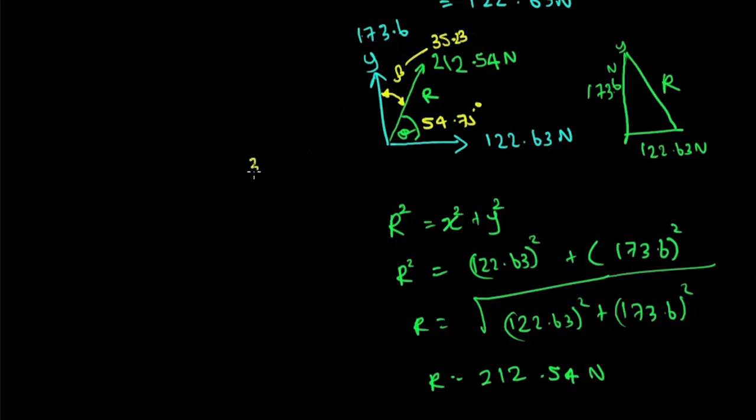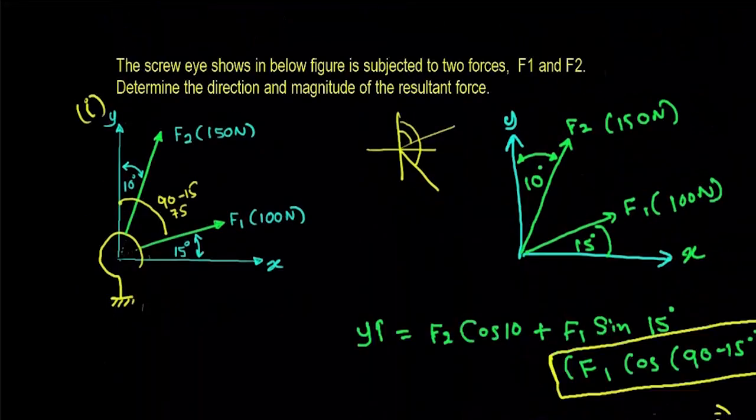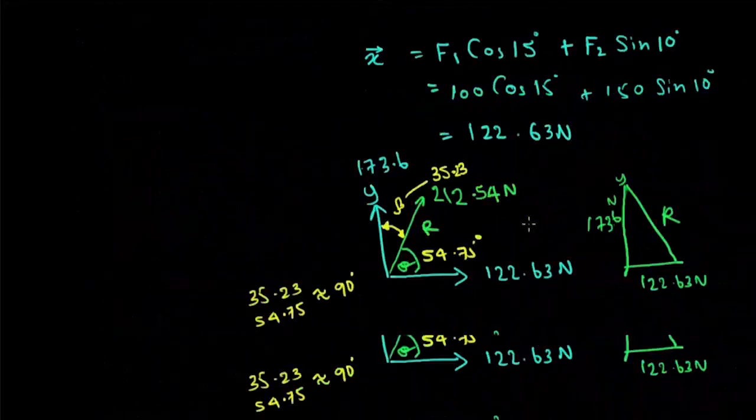35.23 plus 54.75 will be nearly equal to 90. So that's another way you can use to solve this kind of problems. Thank you.